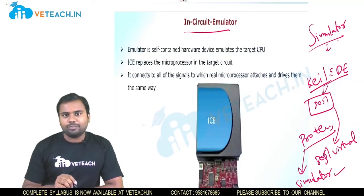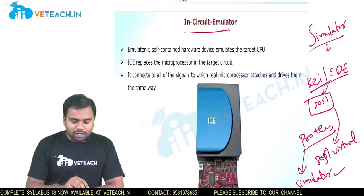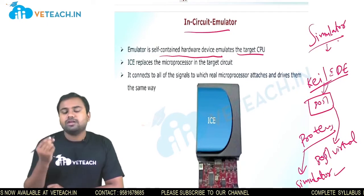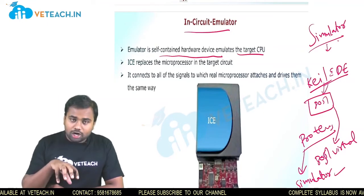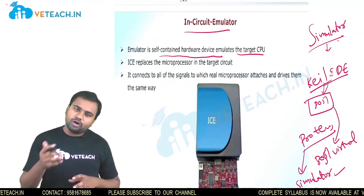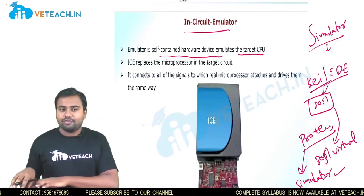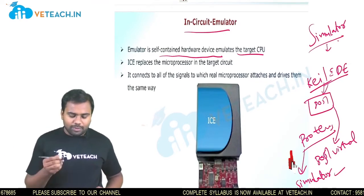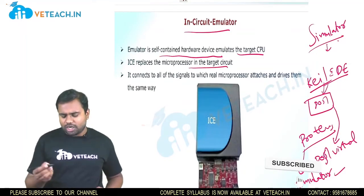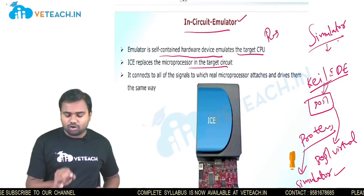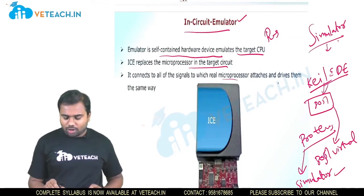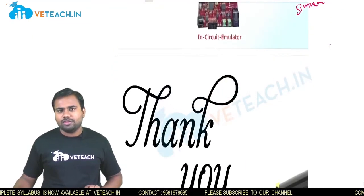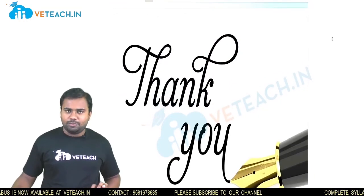An emulator is a self-contained hardware device that emulates the target CPU. In an emulator, the hardware itself is aware of the software — you can change the program and it is directly dumped into the hardware. This is the in-circuit emulator: it replaces the microprocessor in the target CPU. For example, a Raspberry Pi can be considered an in-circuit emulator. It connects all signals with a real microprocessor using the same drivers.